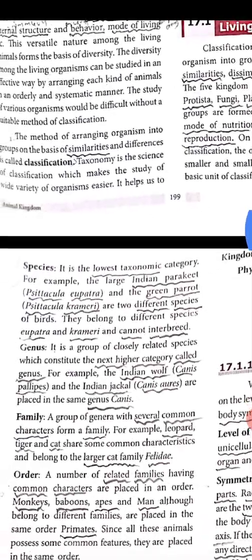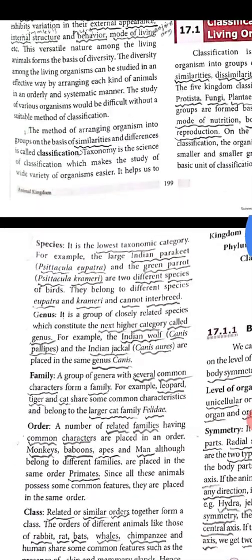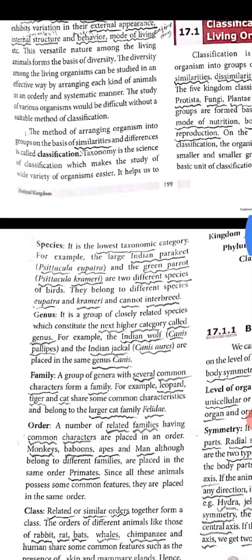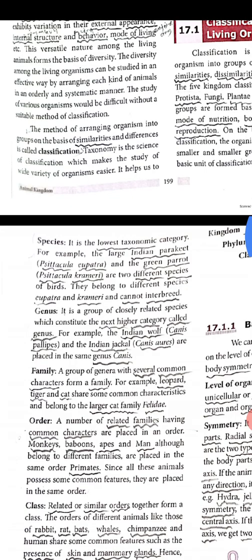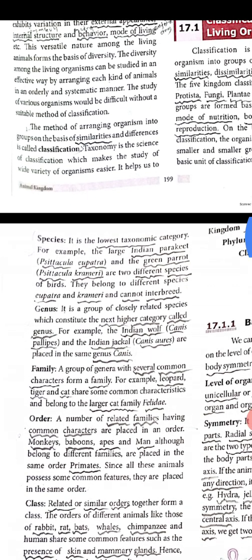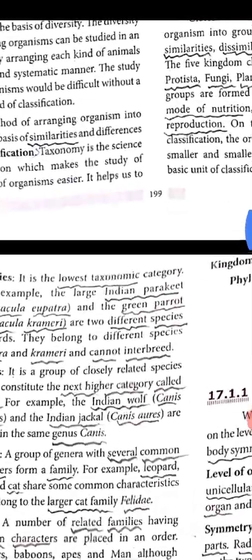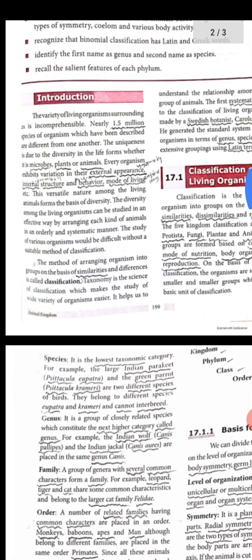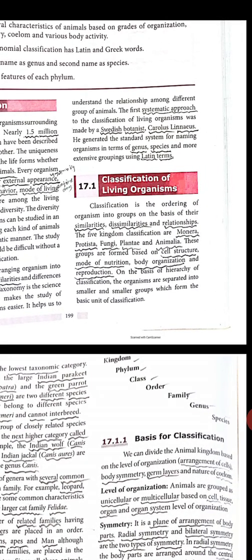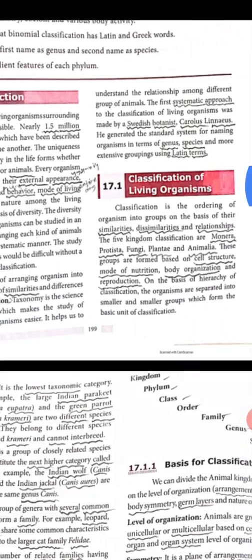Taxonomy is the science of classification, which makes the study of the wide varieties of organisms easier. It helps us to understand the relationship among different groups of animals.